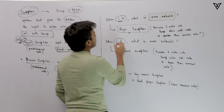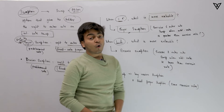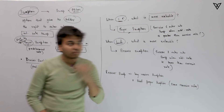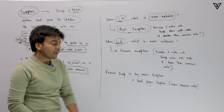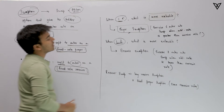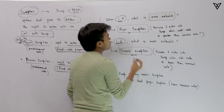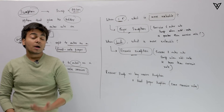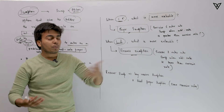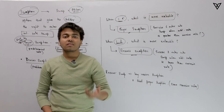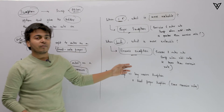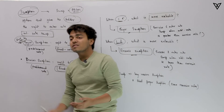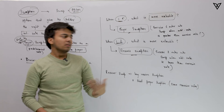At the same time, when interest rates go down, you would want to pay floating and start receiving fixed. In such cases, receiver swaption becomes the more valuable swaption, because in this one you get an opportunity to receive fixed and pay floating. That is what you want when interest rates start to go down. When the market interest rate is less than the exercise rate, a person would exercise his receiver swaption.